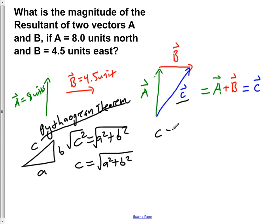If we do so, we're going to have C equals, following this form here, the square root of A squared plus B squared.